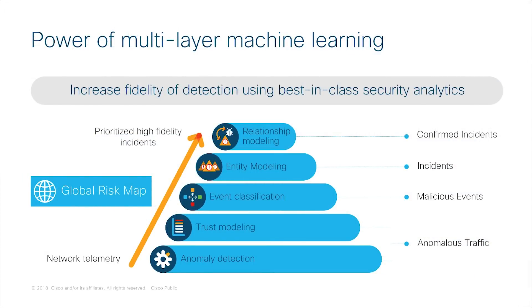So what do we mean by multi-layered machine learning? Stealthwatch Enterprise can correlate threat behaviors seen in the enterprise with those seen globally, by processing massive amounts of data near real-time to discover anomalous and malicious network activity indicative of a breach. The system analyzes user and device behavior to discover malware infections, command and control communications, data exfiltration, and potentially unwanted applications operating in an organization's infrastructure. Multiple layers of processing apply a combination of techniques from artificial intelligence, machine learning, and mathematical statistics to self-learn normal network behavior.